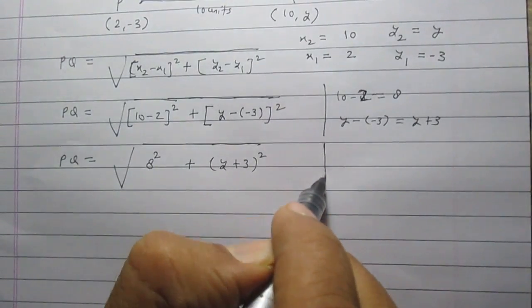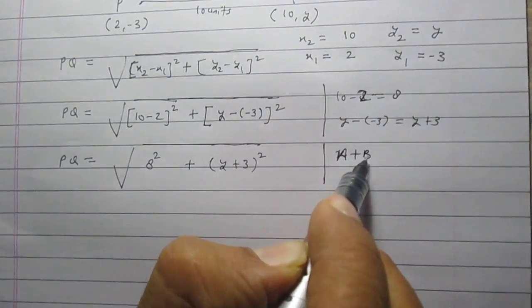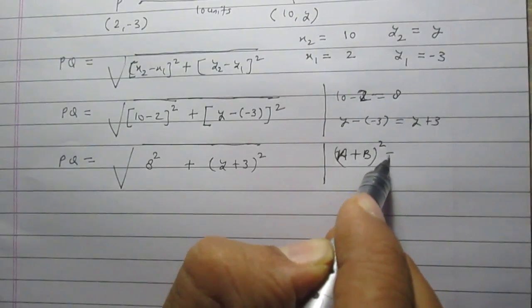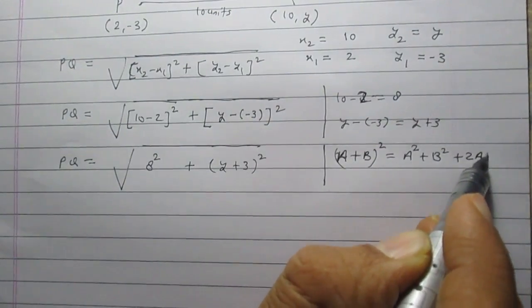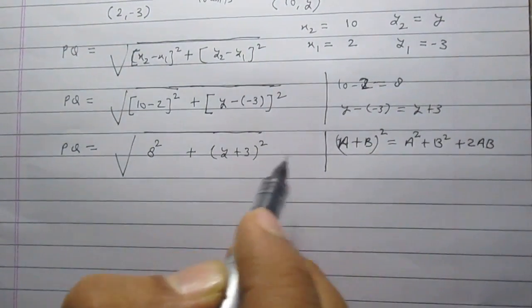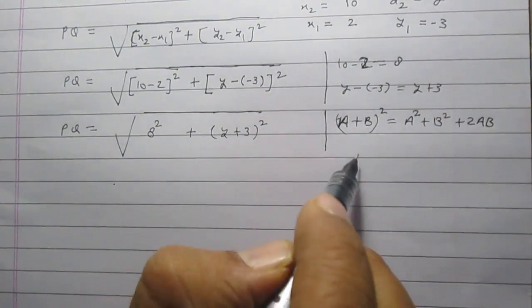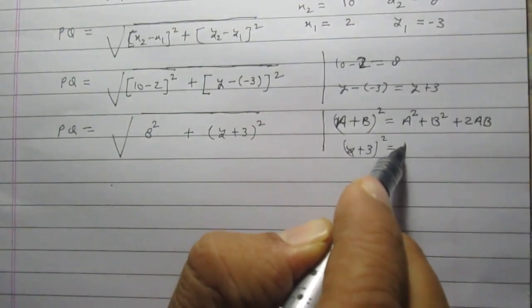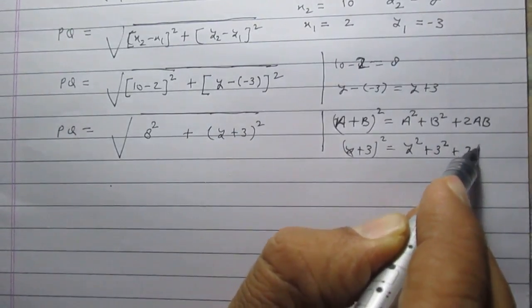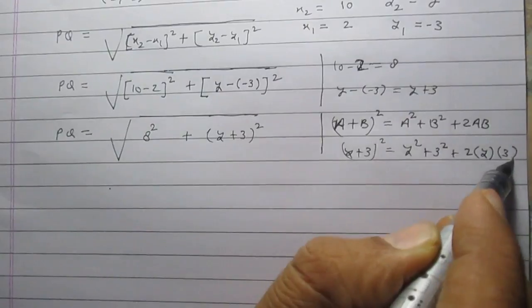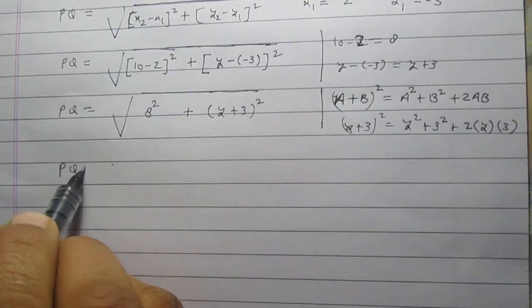According to the algebraic identity, (a + b)² = a² + b² + 2ab. Using this identity, we can expand (y + 3)² as y² + 3² + 2 × y × 3.